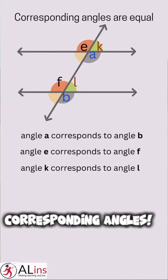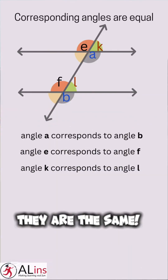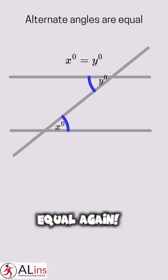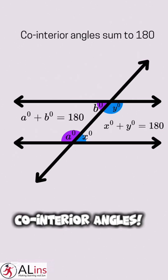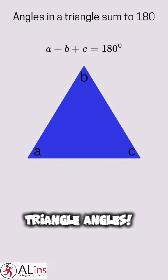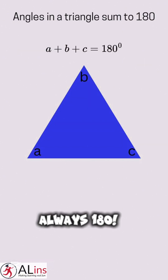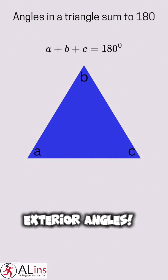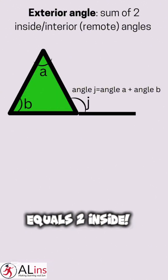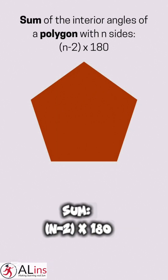Corresponding angles, they are the same. Alternate angles, equal again. Co-interior angles, they sum to 180. Triangle angles, always 180. Exterior angle equals the sum of the two inside. Polygon angle sum: n minus 2, times 180.